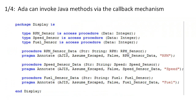ADA can invoke Java methods via the callback mechanism. The ADA package display will create on the Java side a class called display_package inside a Java package called display. The type declarations specify the names of abstract classes that will be generated on the Java side.